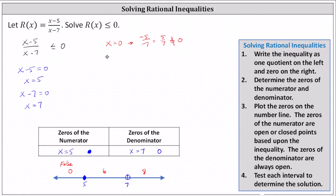Now we test x equals 6. When x is 6, we have 1 divided by negative 1, which simplifies to negative 1. Negative 1 less than or equal to 0 is true. Because the test value is true, the entire interval is true. Finally, we test x equals 8. When x is 8, we have 3 divided by 1, or 3. Three less than or equal to 0 is not true. Because the test value is false, the entire interval is false.